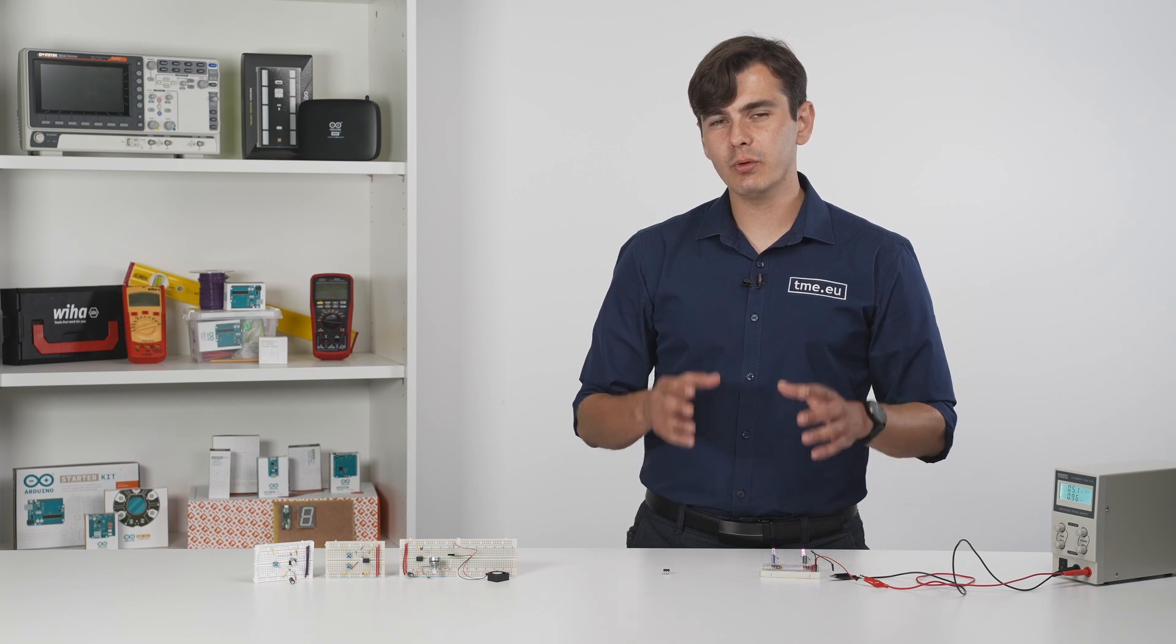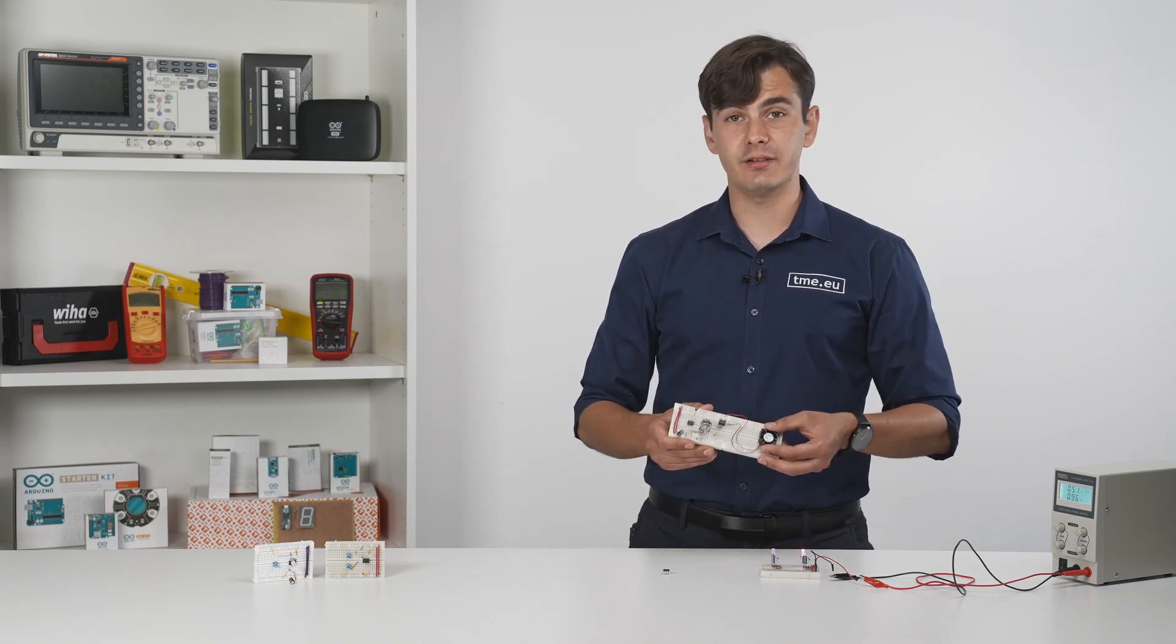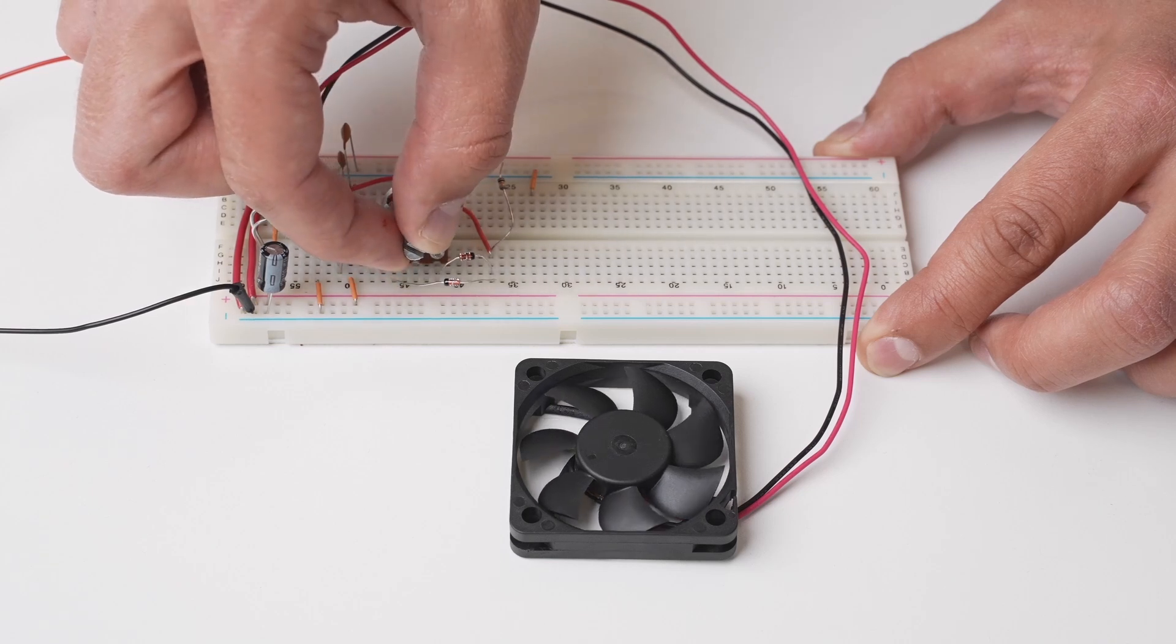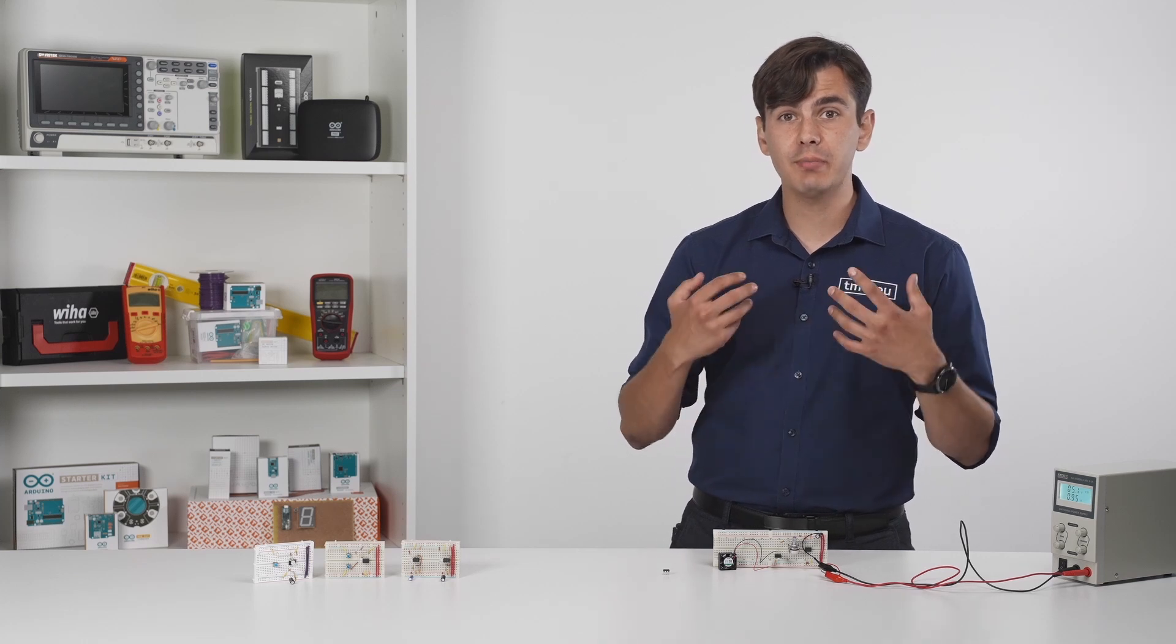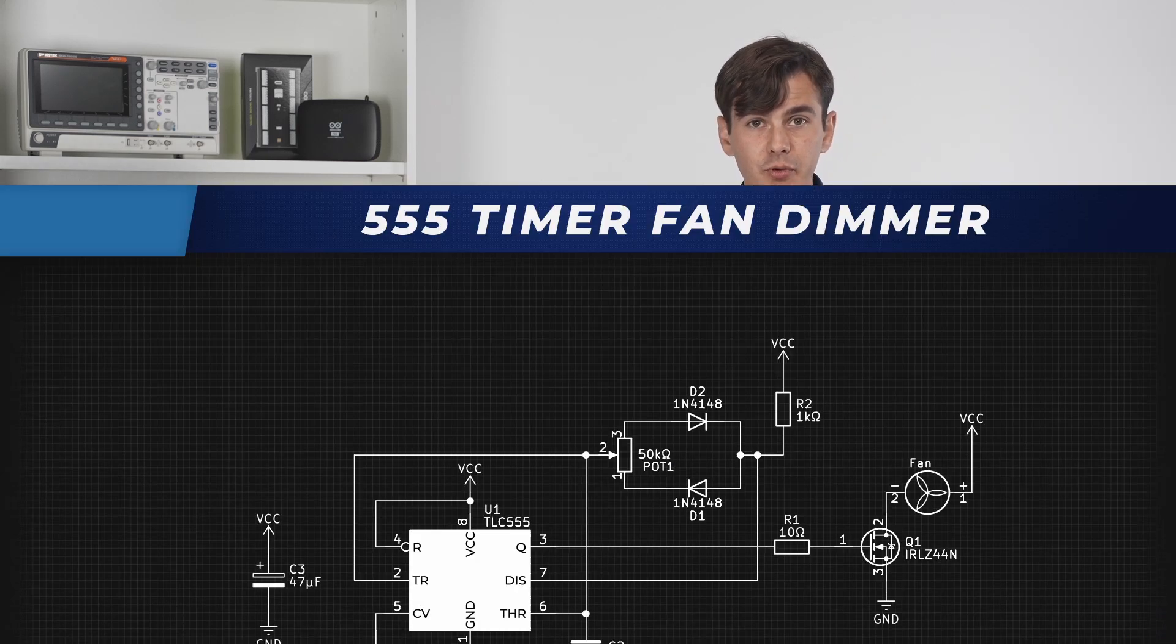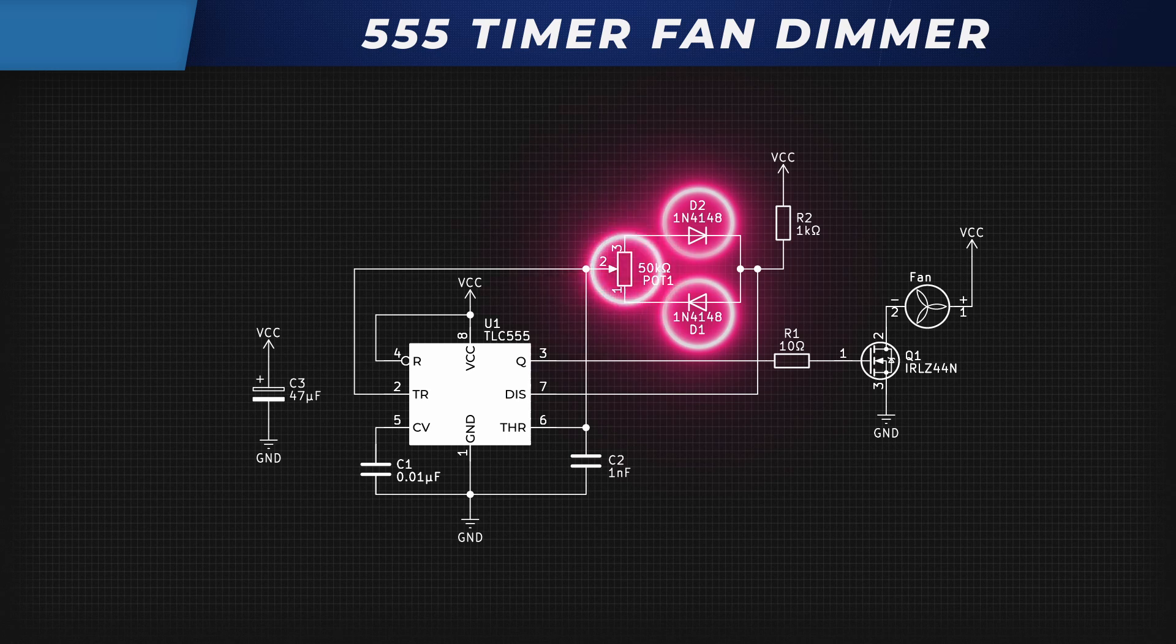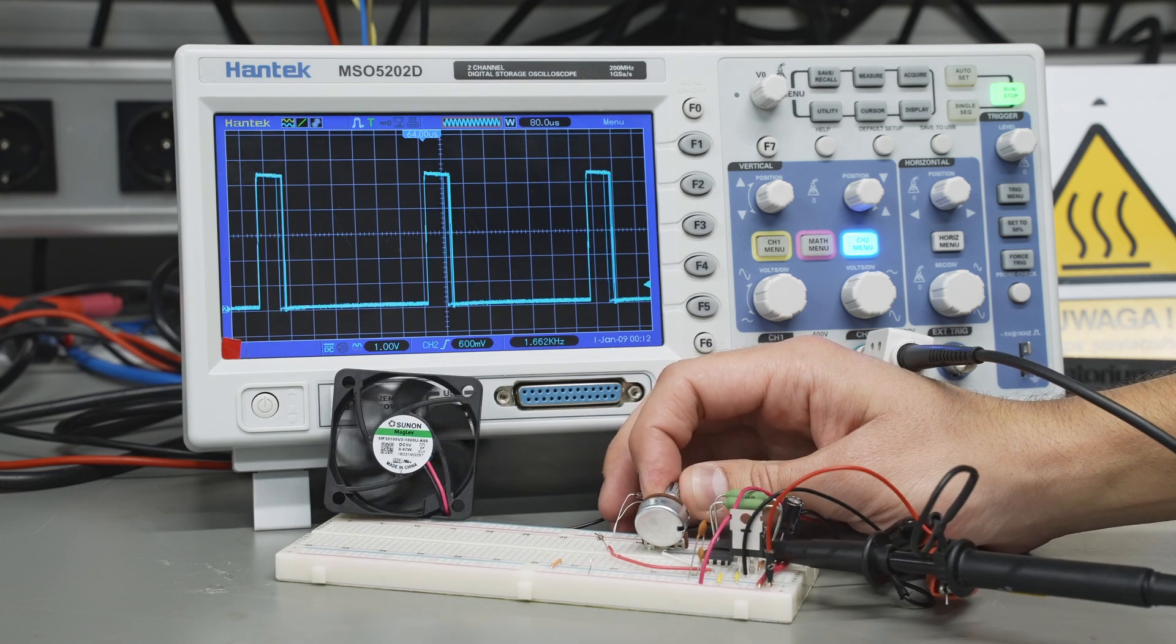But what if we want to adjust the duty cycle with a variable resistor? To check this out, we have the next circuit. In this circuit, we use the TLC555 timer instead of the NE555. It can operate at much higher frequencies and can be powered with lower voltages. From the diagram, you can see that there are two Zener diodes that are added to separate the charged and discharged current while the potentiometer adjusts the current. In the end, the N-channel MOSFET is connected to switch the power for the fan. We can check with an oscilloscope how the PWM changes and the fan adjusts its speed accordingly.